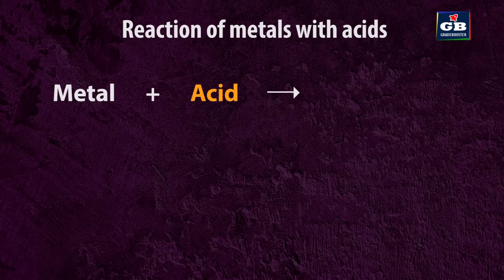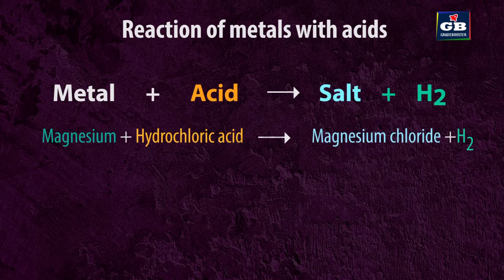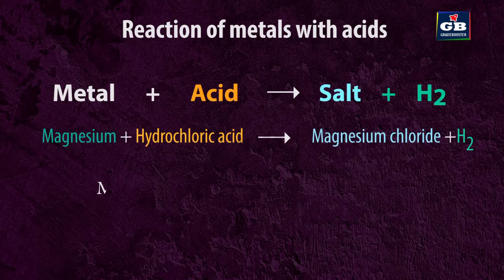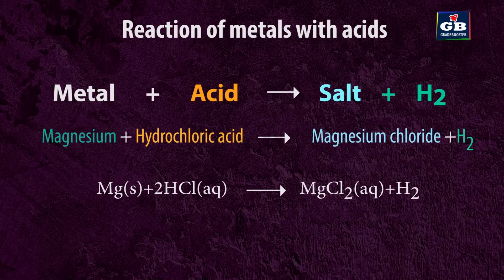Reaction of metals with acids. Metals react with acids to give a salt and hydrogen gas. For example, magnesium plus hydrochloric acid gives magnesium chloride plus hydrogen gas. Mg + 2HCl → MgCl₂ + H₂. So, metal + dilute acid → salt + hydrogen.